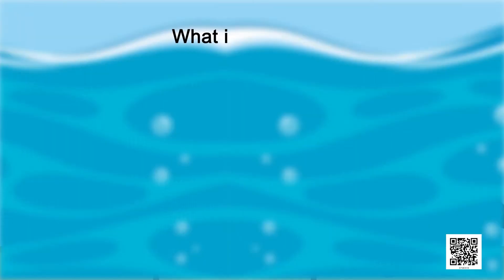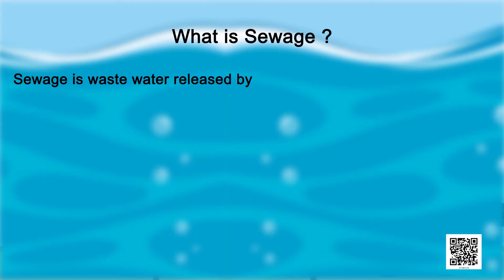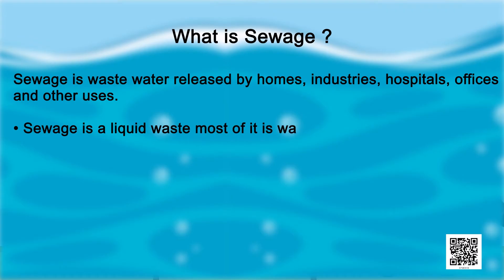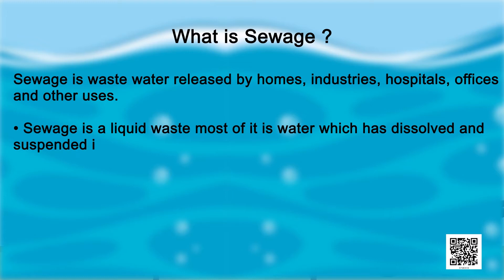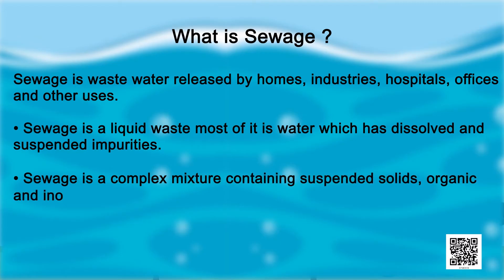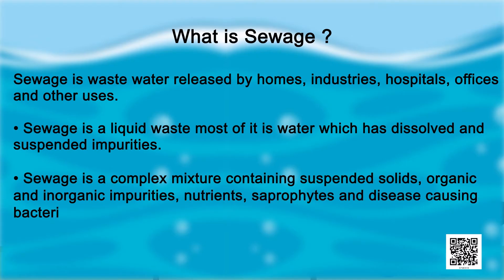All efforts made during this decade aim to reduce by half the number of people who do not have access to safe drinking water. What is sewage? Sewage is wastewater released by homes, industries, hospitals, offices and other users. Sewage is a liquid waste; most of it is water which has dissolved and suspended impurities. Sewage is a complex mixture containing suspended solids, organic and inorganic impurities, nutrients, saprophytes and disease-causing bacteria and other microbes.